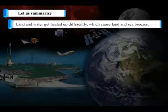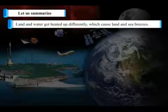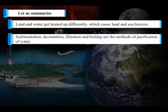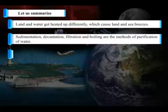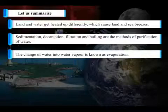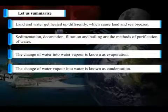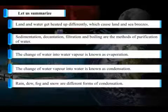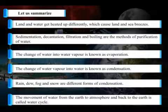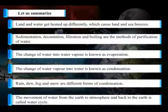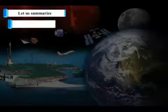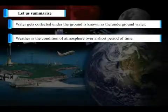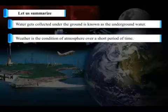Let us summarize. Land and water get heated up differently, which cause land and sea breezes. Sedimentation, decantation, filtration and boiling are the methods of purification of water. The change of water into water vapor is known as evaporation. The change of water vapor into water is known as condensation. Rain, dew, fog and snow are different forms of condensation. The movement of water from the earth to atmosphere and back to the earth is called the water cycle. Water collected under the ground is known as underground water. Weather is the condition of atmosphere over a short period of time.